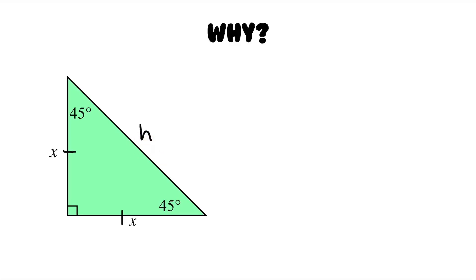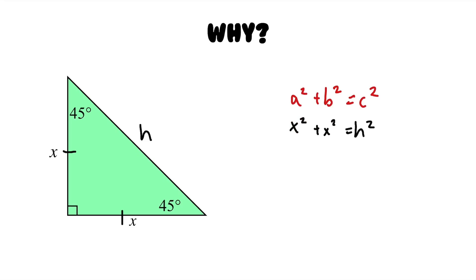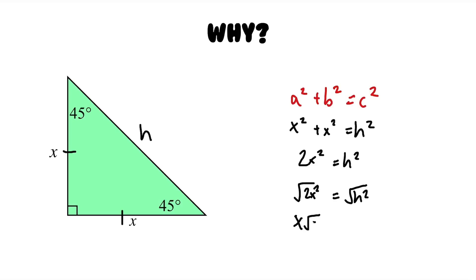Since both of these angles in this right triangle are the same, that means it's an isosceles right triangle, which means these two side lengths must be congruent — so this side is also X. Now let's call this side H for hypotenuse. To solve for H in terms of X, we're going to use the Pythagorean theorem: a squared plus b squared equals c squared, where a and b are the two legs and c is the hypotenuse. Plugging in our values, we get x squared plus x squared equals h squared. Combining like terms gives us 2x squared equals h squared. Taking the square root of both sides gives us x root 2 equals h. So the hypotenuse is equal to x root 2. That's how we got the pattern of a 45-45-90 right triangle: the two legs are equal, and the hypotenuse is that leg times the square root of 2.